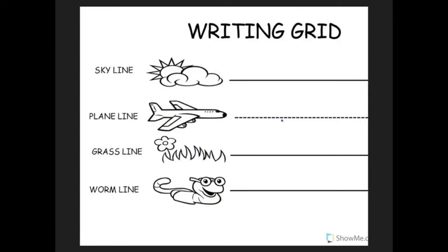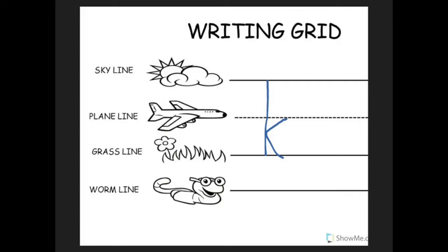J. J is also a plain line letter. Put your pencil on the plain line, pull down to the worm line, backwards for a hook and make a dot. J, jug, j. K. K is a skyline letter. Put your pencil on the skyline, pull down to the grass line, pick up your pencil and move it forward half a space, slide in and slide out. K, kite, k.